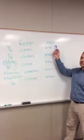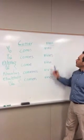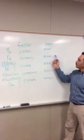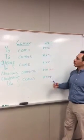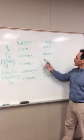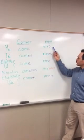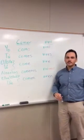So again, once you know the IR endings, you can apply them to any other IR verb. For example, escribir — you're going to say I write: yo escribo, you write: tú escribes, and so on. So it's very important to learn the endings.